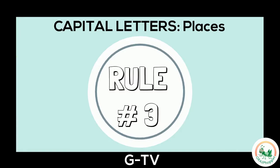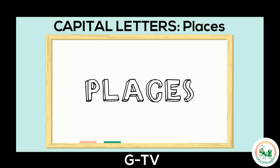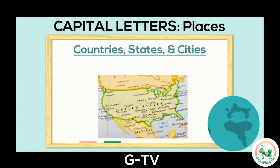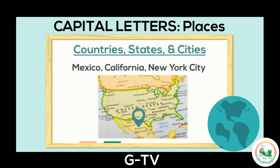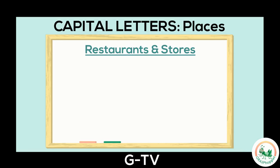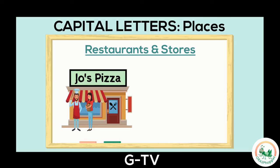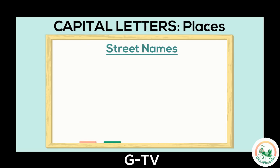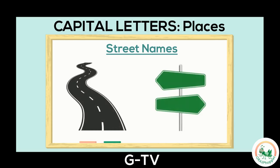Rule number three: capitalizing specific places. When we write the name of a place, we need to use a capital letter. Places can be countries like Mexico, states like California, or cities like New York City. Other places that need a capital are names of specific restaurants, like Joe's Pizza, or stores like Kix. Finally, you need to put a capital letter on the names of streets, like Mack Street.